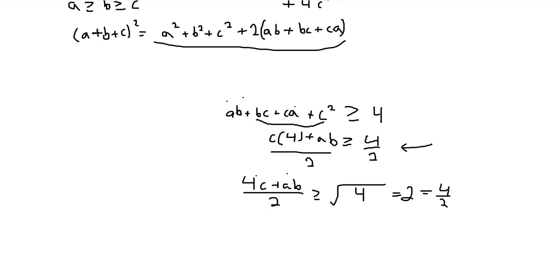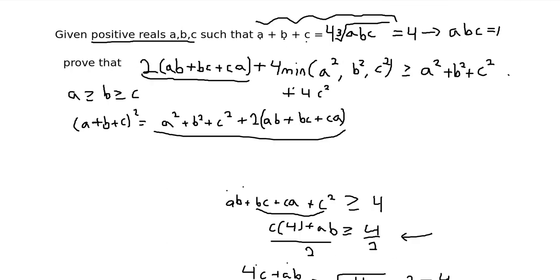Since everything we've done is reversible, that implies the original inequality is true. I hope I highlighted the key intuitions for this problem, which were basically homogeneity and factoring. If you realize that some condition or inequality is homogeneous, it's very helpful to manipulate it — because then you can have more numbers instead of more variables, and that's always the better road, especially for inequalities. Thank you for watching, and I'll see you in my other videos.